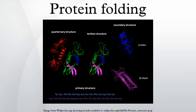Protein folding is the process by which a protein structure assumes its functional shape or conformation. It is the physical process by which a polypeptide folds into its characteristic and functional three-dimensional structure from random coil. Each protein exists as an unfolded polypeptide or random coil when translated from a sequence of mRNA to a linear chain of amino acids, lacking any stable three-dimensional structure.